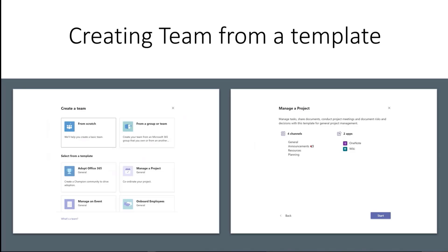When you look at creating a team, it's a fairly simple process for any user in the organization. Just recently a feature rolled out where we're now able to create Microsoft Teams from a set of templates. In particular, when you look at the project template, in essence all you're getting is four channels — General tends to be there every time anyways — and then two apps: OneNote and the wiki, which I don't really use that much. From a project manager's perspective, you just get the basic channels. It doesn't really come with anything particularly rich.